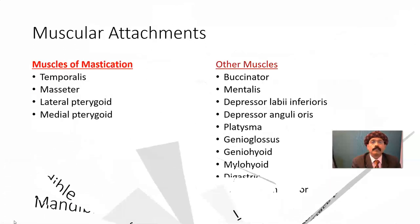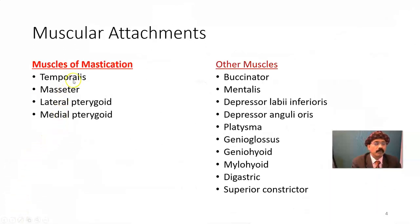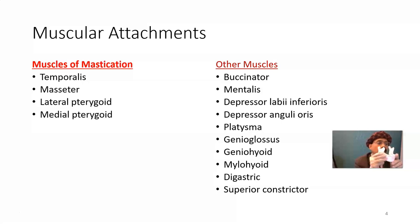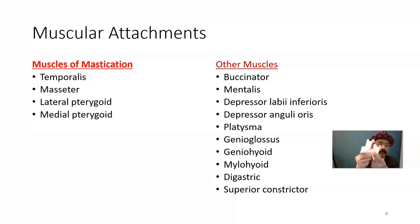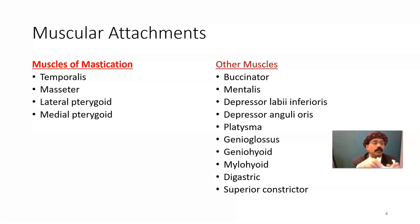Now for muscular attachments: the muscles of mastication are temporalis, masseter, lateral pterygoid, and medial pterygoid. Temporalis is inserted along the coronoid process. Masseter attaches to the lateral side of the ramus. Lateral pterygoid attaches around the condyle. Medial pterygoid attaches on the inner side of the mandible, along the angle of the mandible.